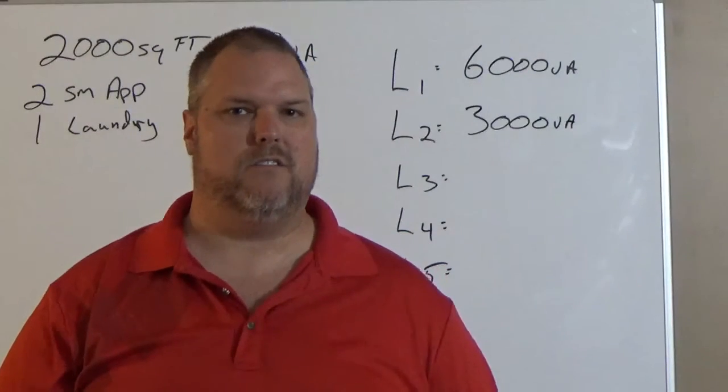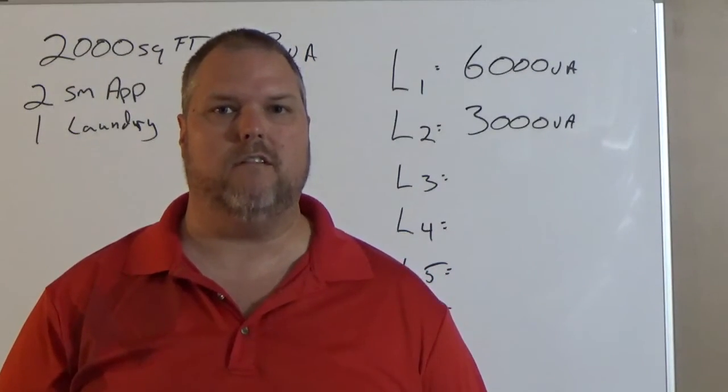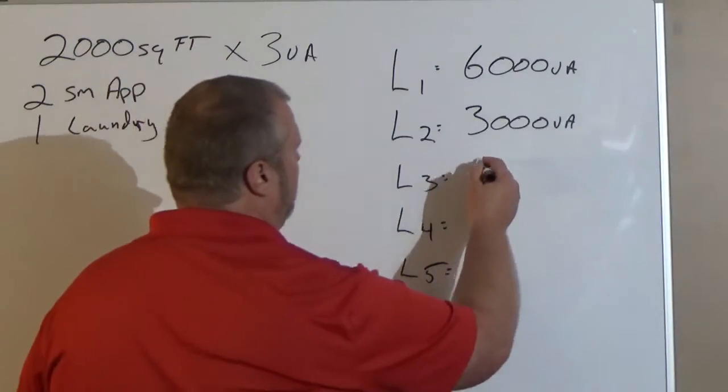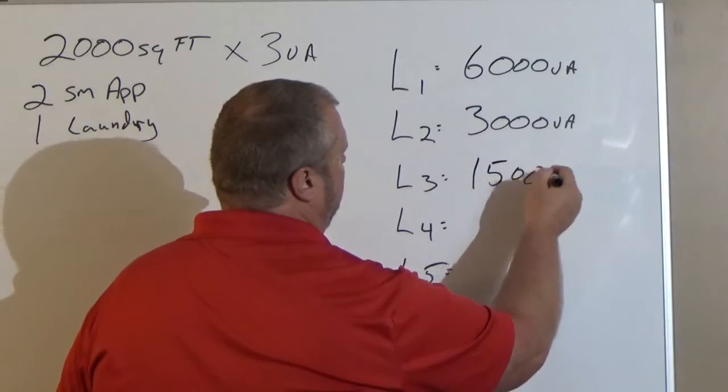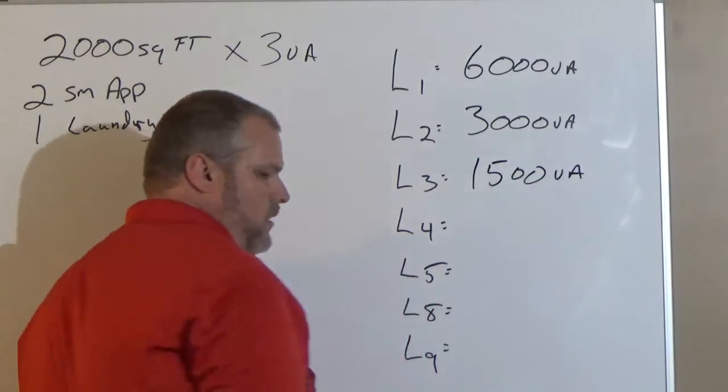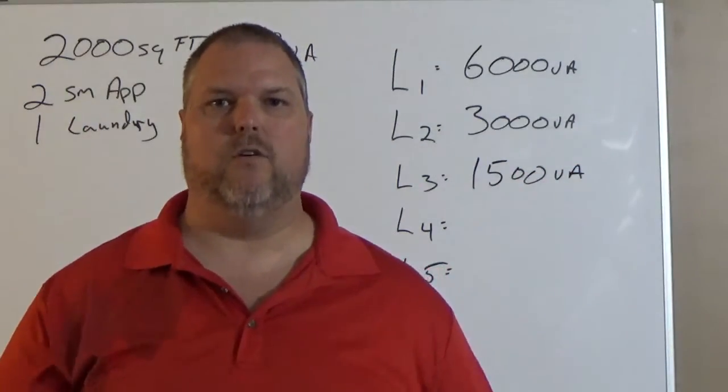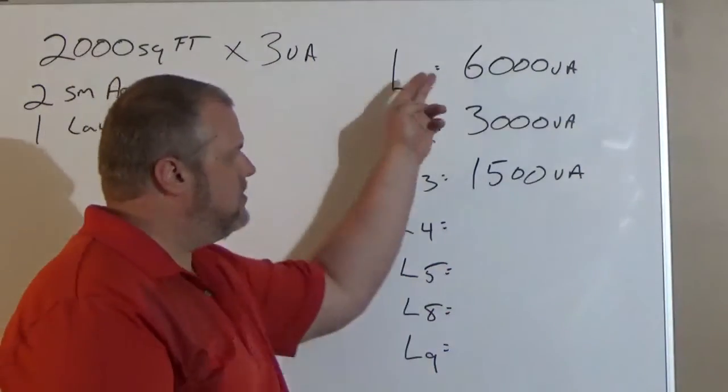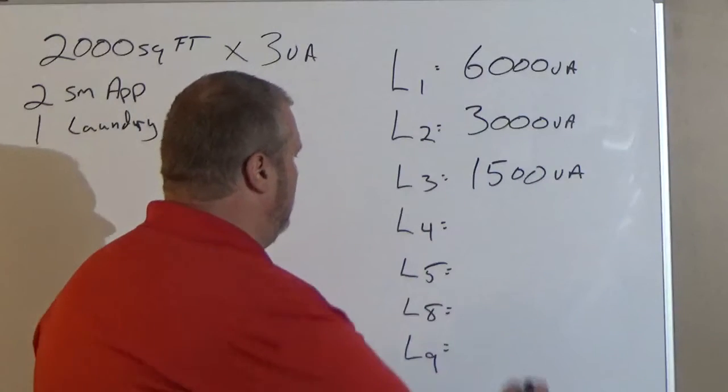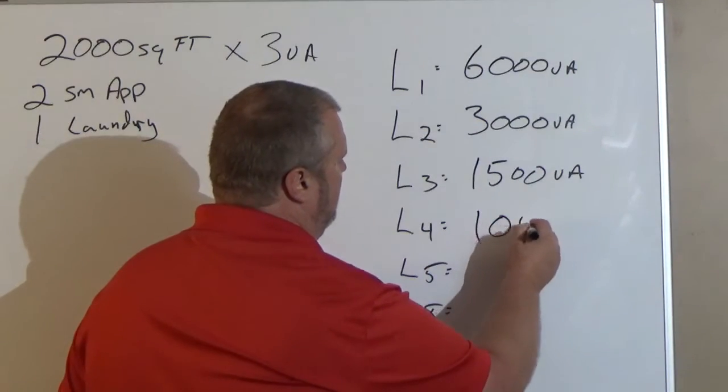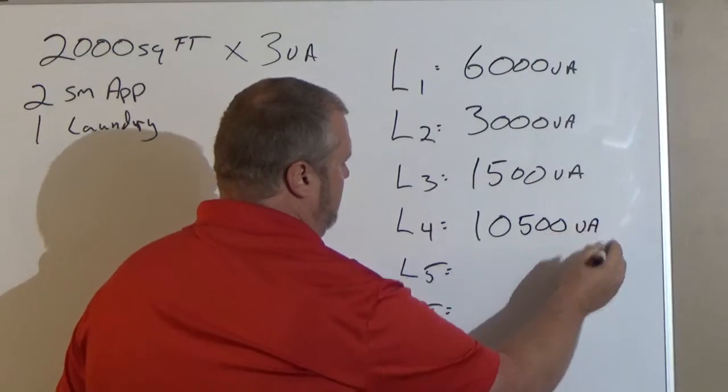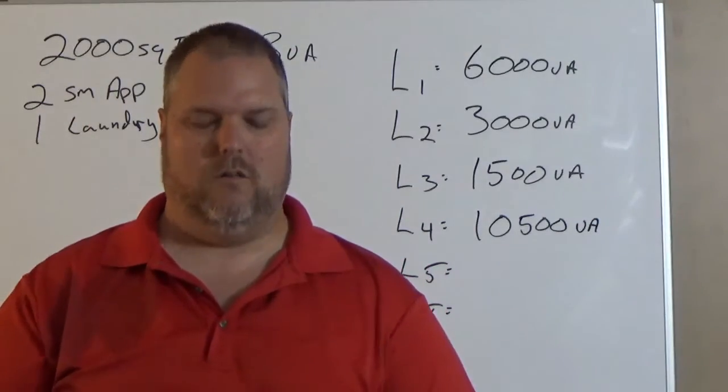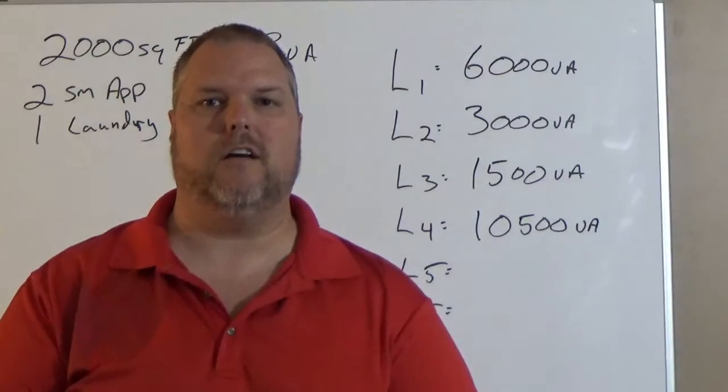Line 3 is going to be our laundry circuit. So we have one laundry circuit. We're going to put 1,500 in. Line 4 is simple. Line 4 is the total. So we're going to add this all up. We're going to take 6,000 and 3,000 and 1,500 and that is going to give us 10,500 VA. Are we done? Nope.